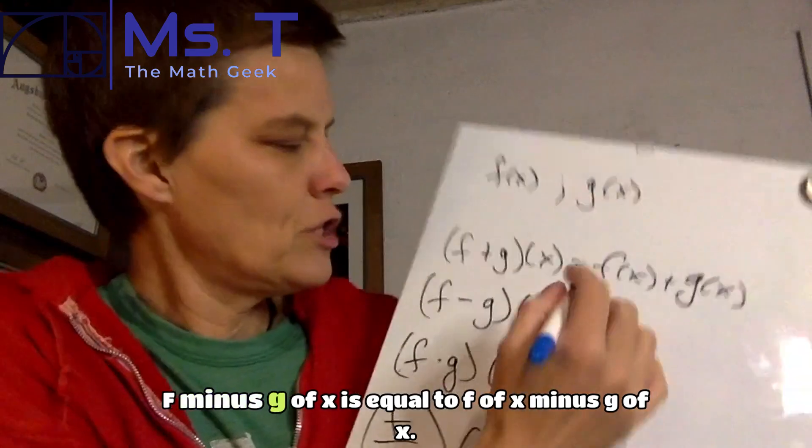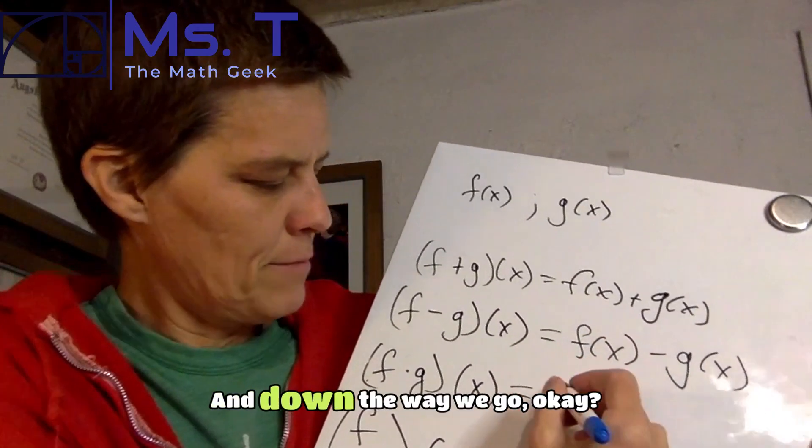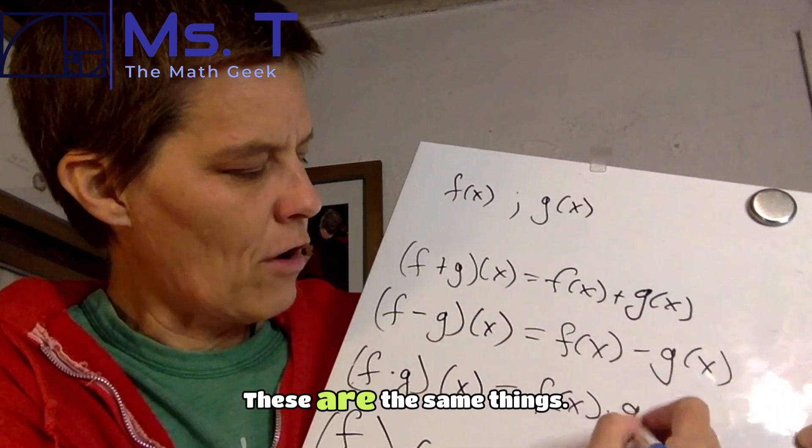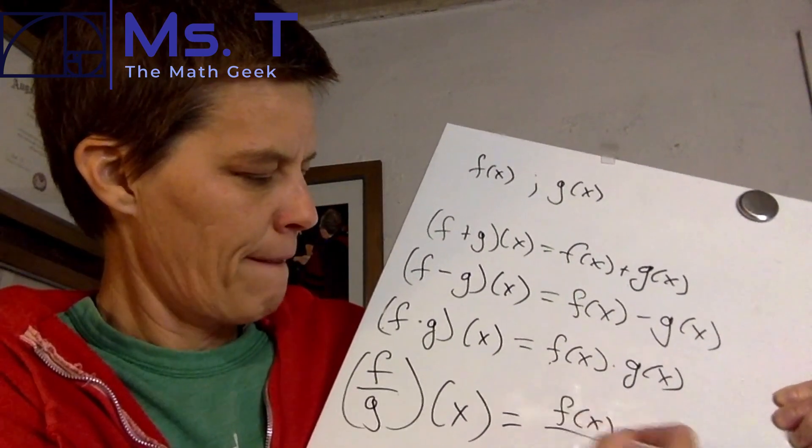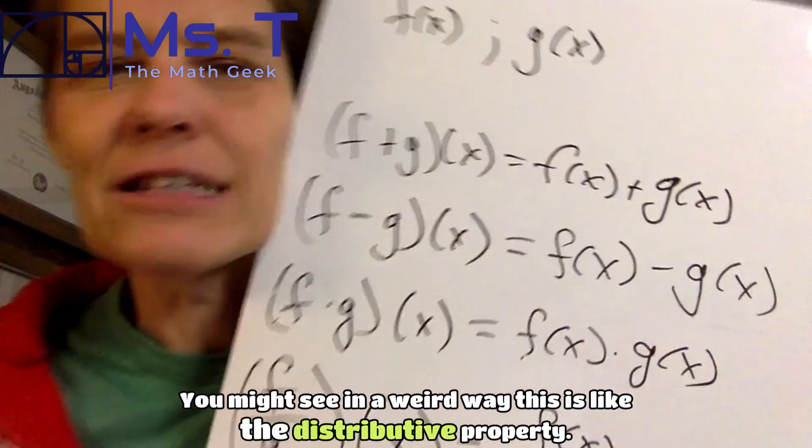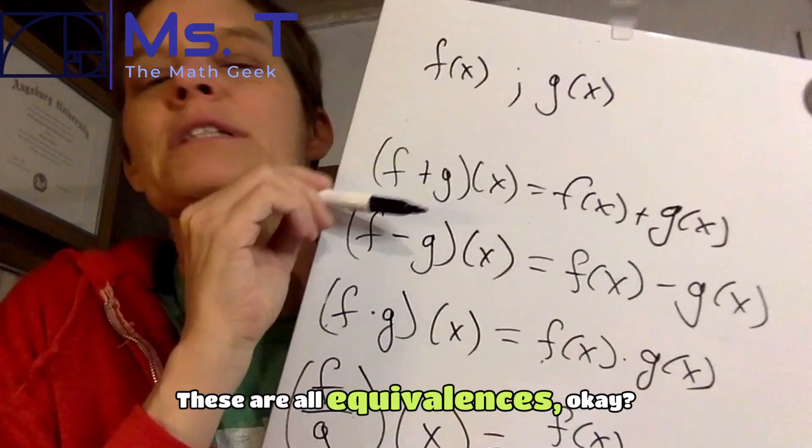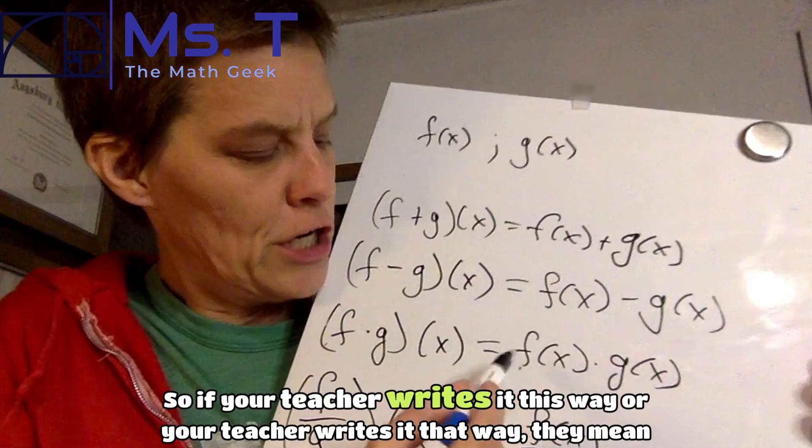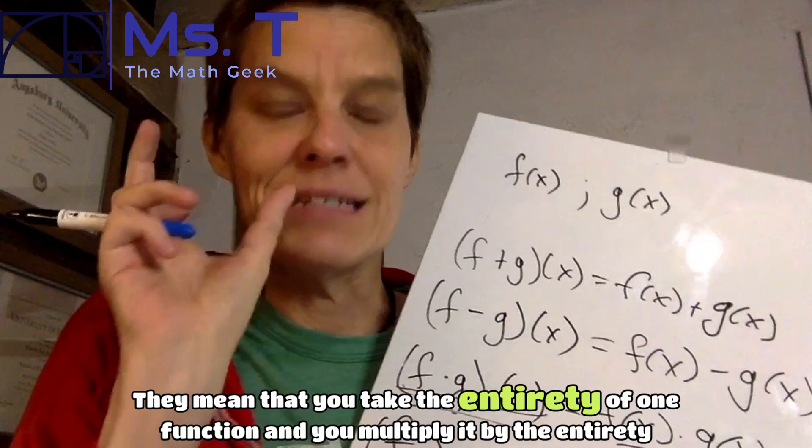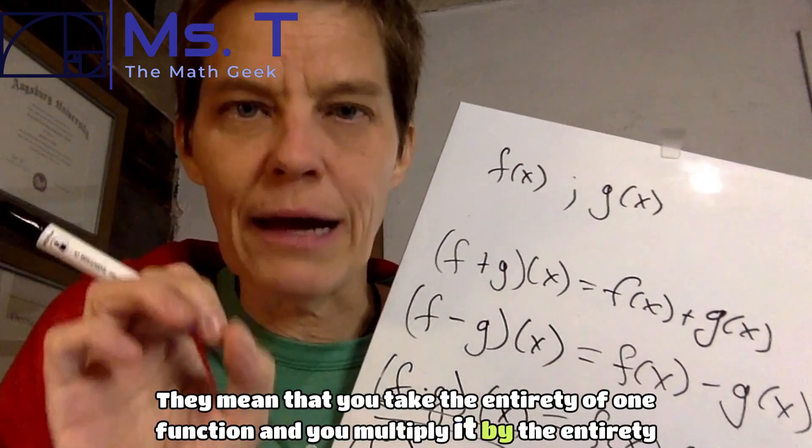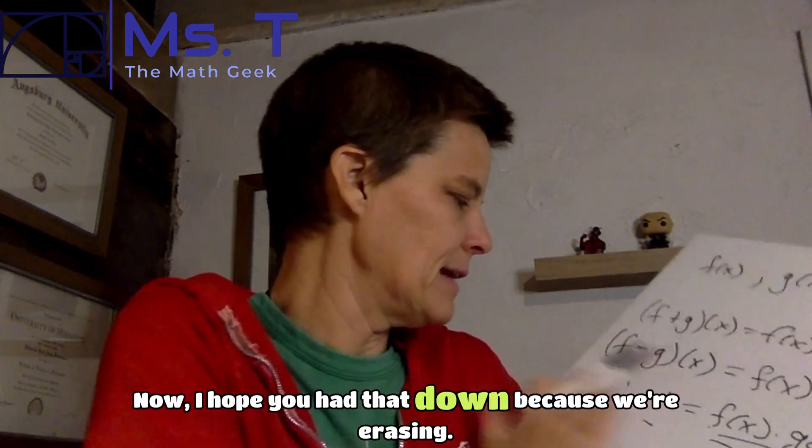So f minus g of x is equal to f of x minus g of x. And down the way we go. These are the same things. And you might be going, oh my gosh, Ms. Thompson, I completely don't get what you're writing. You might see, in a weird way, this is like the distributive property, because we're distributing the x to its functions. These are all equivalences. So if your teacher writes it this way, or your teacher writes it that way, they mean the same thing. They mean that you take the entirety of one function, and you multiply it by the entirety of the other function. Now, hope you had that down, because we're erasing.